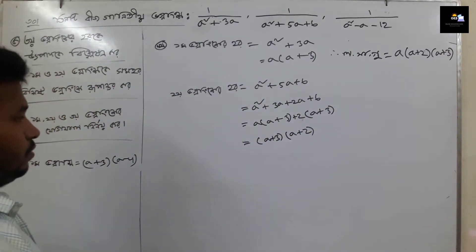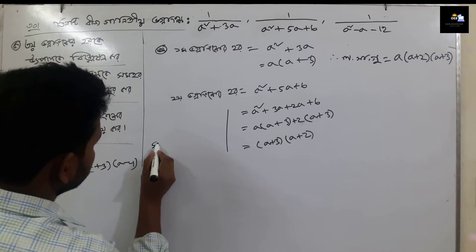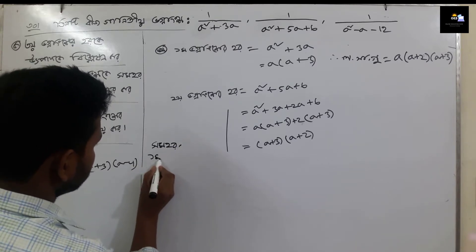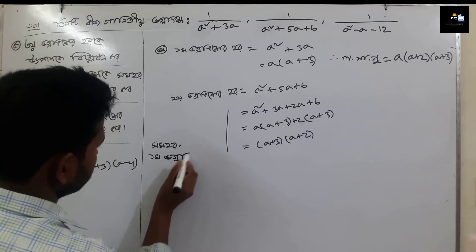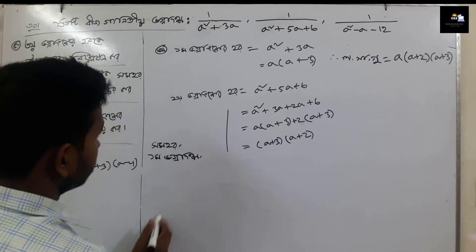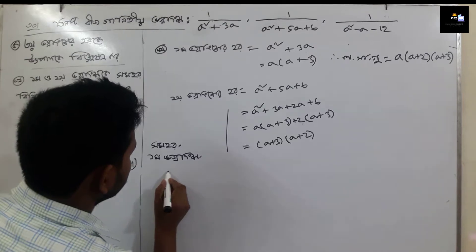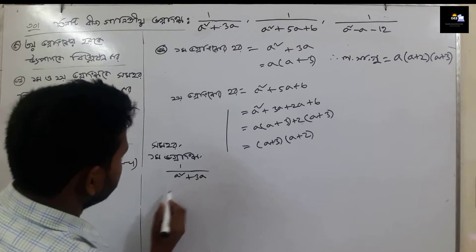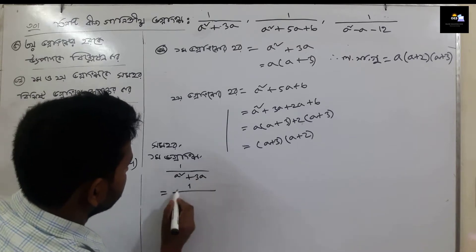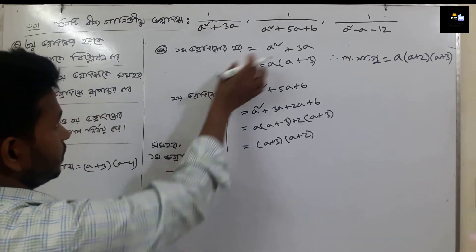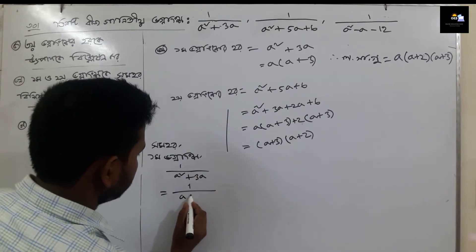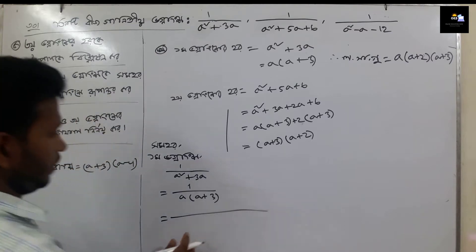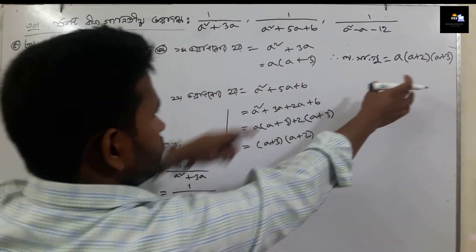The number is the same. We have the same one. The first one is the same. So we have to add 1 by a square plus 3. We have to add 2 from a plus 3.